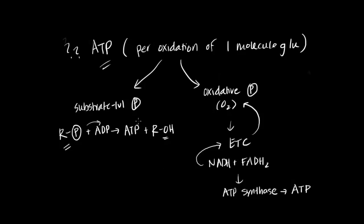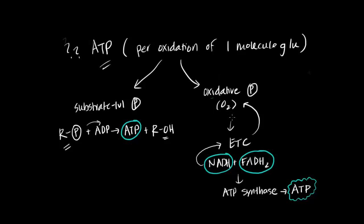It has been possible to calculate the exact number of ATP produced in substrate-level phosphorylation, and we've also nailed down the amount of NADH and FADH2 molecules produced. But for quite a while, it was difficult to nail down the exact number of ATP molecules produced in oxidative phosphorylation. For this reason, you might often see quite a range of predictions for how much ATP is actually produced in one cycle of cellular respiration — anywhere from 30 to 38 molecules of ATP predicted to be produced for the oxidation of one molecule of glucose.